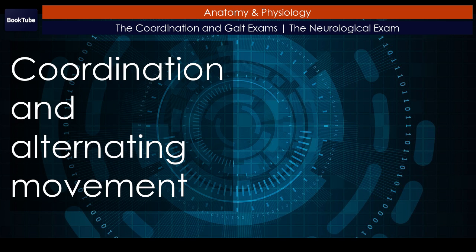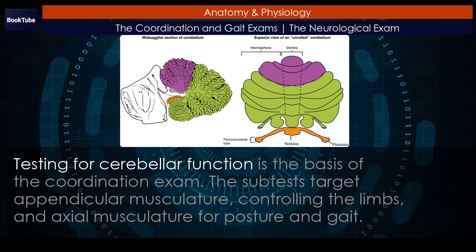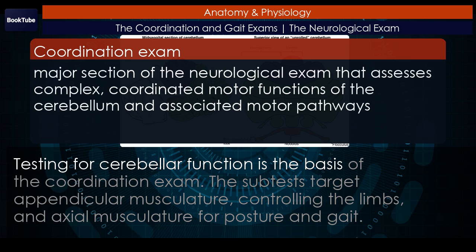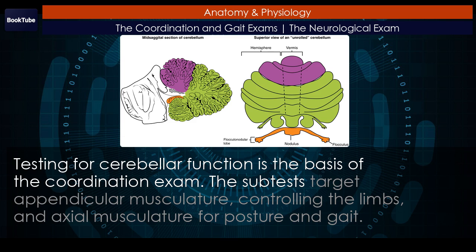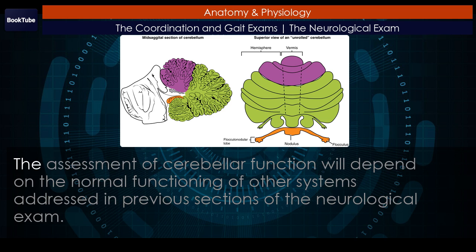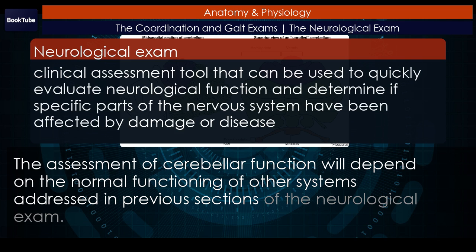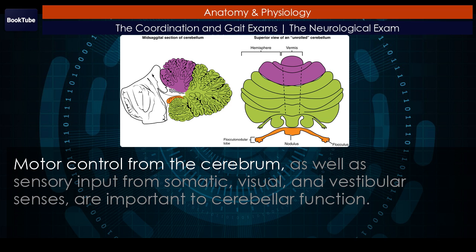Testing for cerebellar function is the basis of the coordination exam. The subtests target appendicular musculature, controlling the limbs, and axial musculature for posture and gait. The assessment of cerebellar function will depend on the normal functioning of other systems addressed in previous sections of the neurological exam. Motor control from the cerebrum, as well as sensory input from somatic, visual, and vestibular senses, are important to cerebellar function.